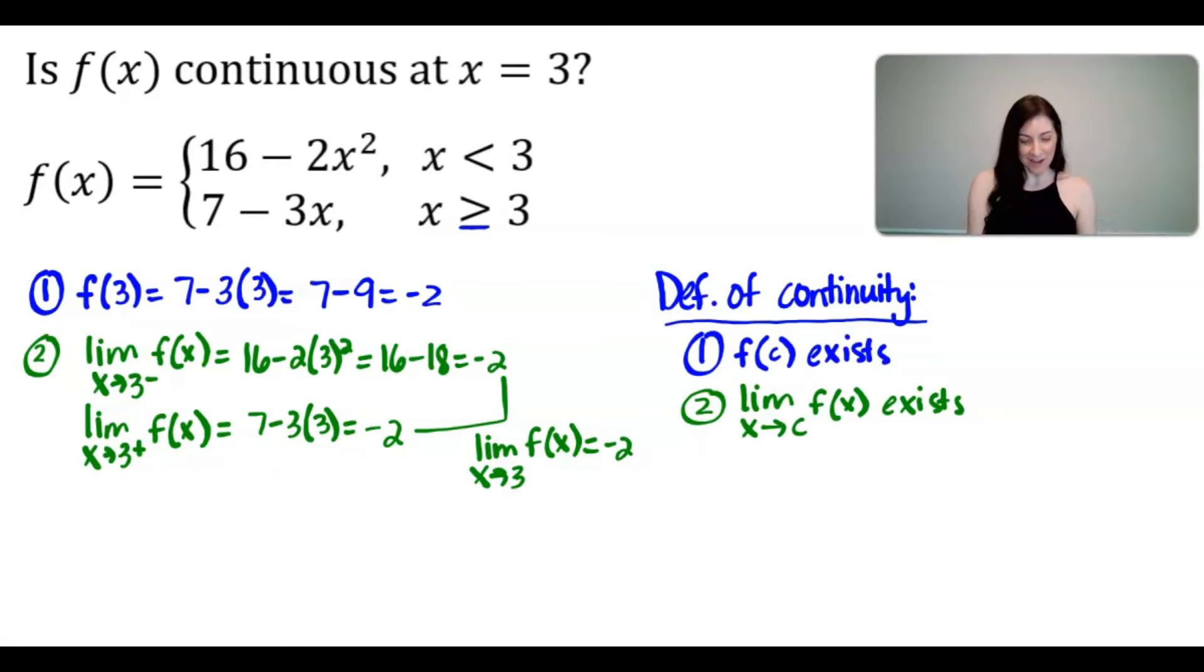And now for the grand finale of the definition of continuity. For a function to be continuous at x equals c, step 3 is that step 1 and 2 have to be equal to each other. So f of c needs to equal the limit as x approaches c of f of x. And as long as that is true, f of x is continuous at x equals c.